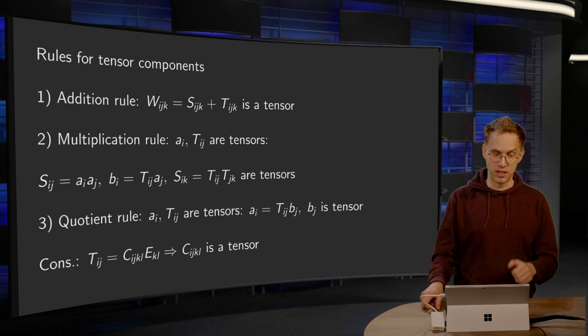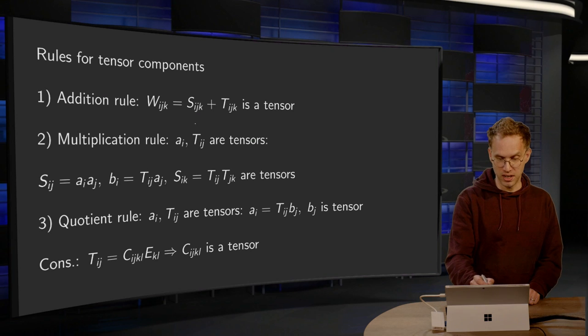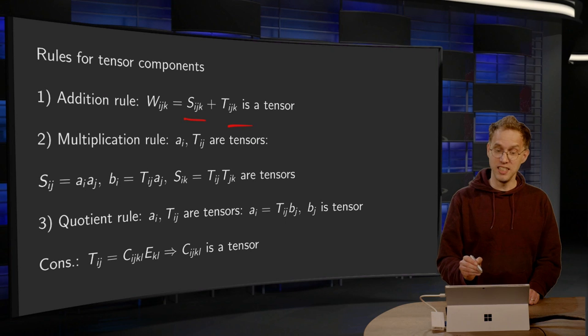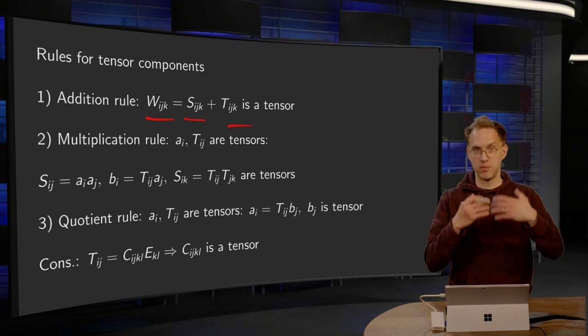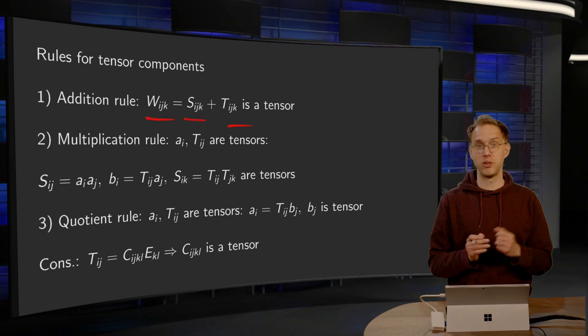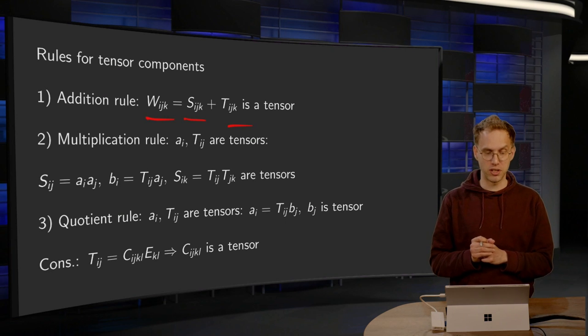So first, the addition rule will be that if you take two tensors, Sijk and Tijk, then the sum is also a tensor, and we will show it for this rank 3 tensor. You can do it for any rank, it goes the same way.